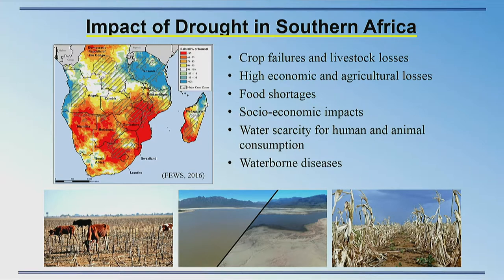Drought impacts agriculture, resulting in economic losses as well as food shortages. This is particularly prominent in areas such as southern Africa, which rely heavily on rain-fed agriculture and subsistence farming. A long-term drought also results in water scarcity, which leads people to seek unsafe water sources, causing the spread of waterborne diseases.